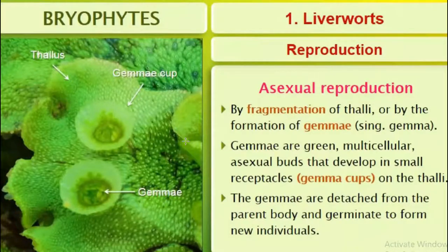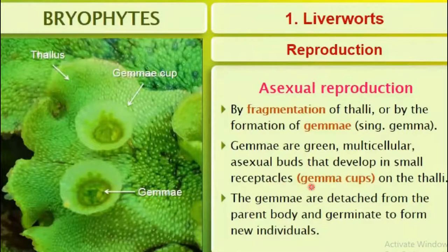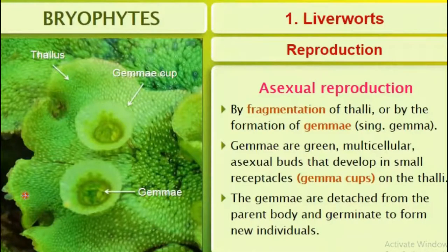Asexual reproduction in liverworts is by fragmentation of the thallus or by the formation of gemma. Gemma is a special kind of structure. They are green, multicellular asexual buds that develop in small receptacles called gemma cups on the thallus. The gemma are detached from the parent body and germinate to form new individuals.